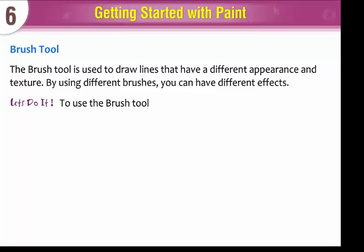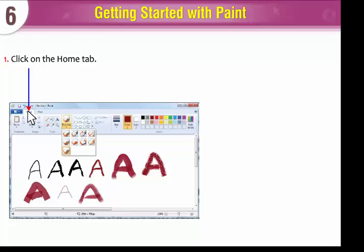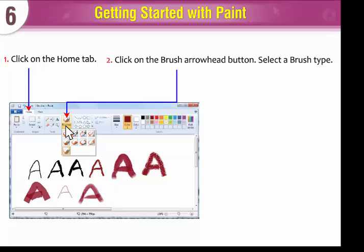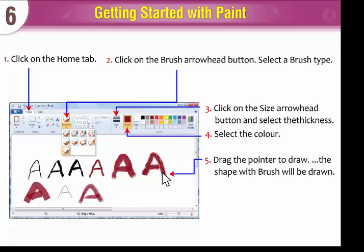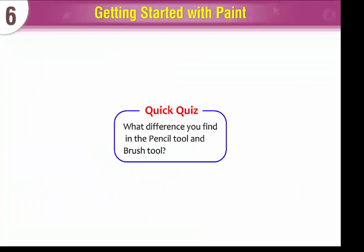To use the brush tool, click on the Home tab. Click on the Brush arrowhead button and select a brush type. Click on the Size arrowhead button and select the thickness. Select the color. Drag the pointer to draw. The shape with brush will be drawn. Quick quiz: What difference do you find in the Pencil tool and Brush tool?